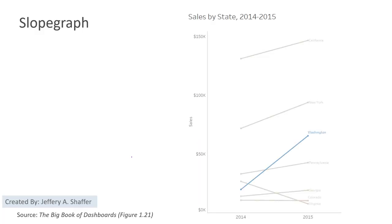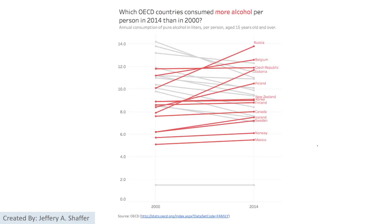Here is one example where they highlighted one specific variable that is increasing. And this is another example showing alcohol consumption, where they are using red colors to highlight the increase of consumption over those two years.